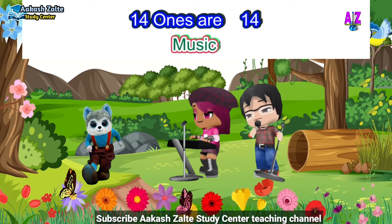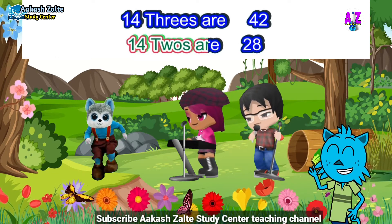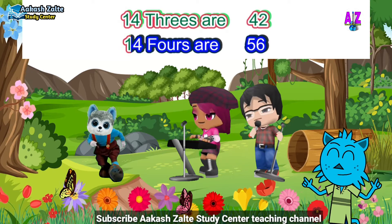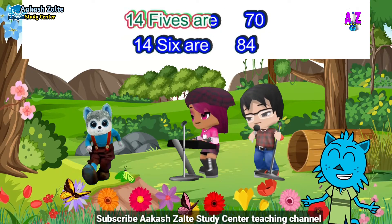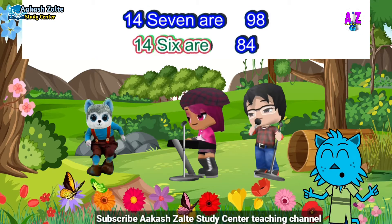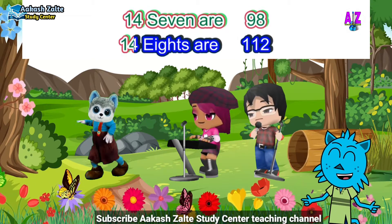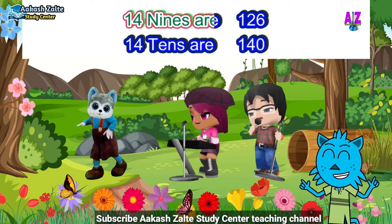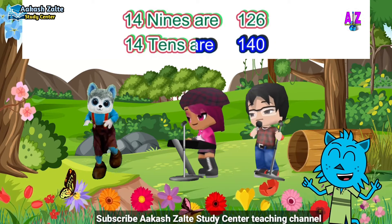14 ones are 14, 14 twos are 28, 14 threes are 42, 14 fours are 56, 14 fives are 70, 14 sixes are 84, 14 sevens are 98, 14 eights are 120, 14 nines are 126, 14 tens are 140.